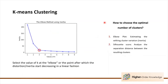An important question is how to choose the optimal number of clusters. There are two methods we can use — the elbow plot and silhouette score — to determine the most accurate number of clusters for k-means. However, this is still a very subjective process.